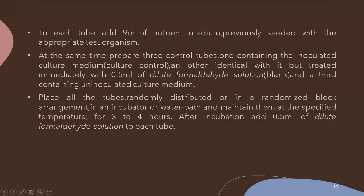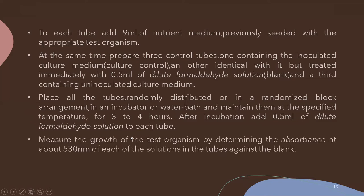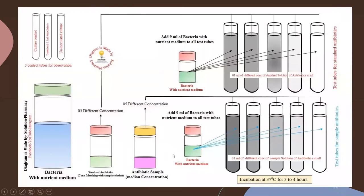Place all tubes in an incubator or incubator water bath at the specified temperature for three to four hours. After incubation, add 0.5 ml of dilute formaldehyde solution to each tube. Then measure the growth of the test microorganism by determining the absorbance at 530 nanometers against the blank. Plot a graph with concentration on the x-axis and absorbance on the y-axis to determine the concentration of the unknown sample.